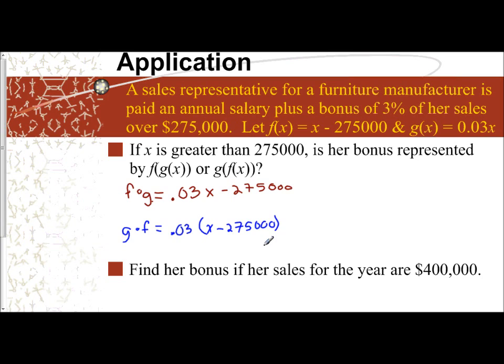The question is, which of these would represent her bonus? Is it f(g(x)) or is it g(f(x))? So we have to figure out what does it mean, bonus. So let's break down the problem. She gets a bonus of 3% when her sales are over $275,000.